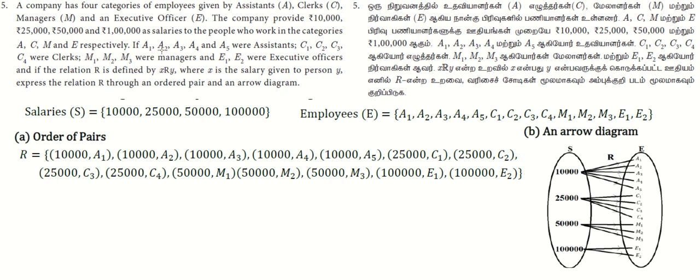and E respectively. A1, A2, A3, A4, A5 were assistants. C1, C2, C3, C4 are clerks. M1, M2, M3 were managers. E1, E2 were executive officers. If the relation R is defined by XRY where X is a salary given to a person Y, express the relation R through ordered pairs and an arrow diagram.